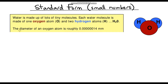If we're measuring the diameter of an oxygen atom — that's just from one side to the other — we're going to need some specialist scientific equipment. The value is approximately 0.00000014 millimetres, so it's really really small.